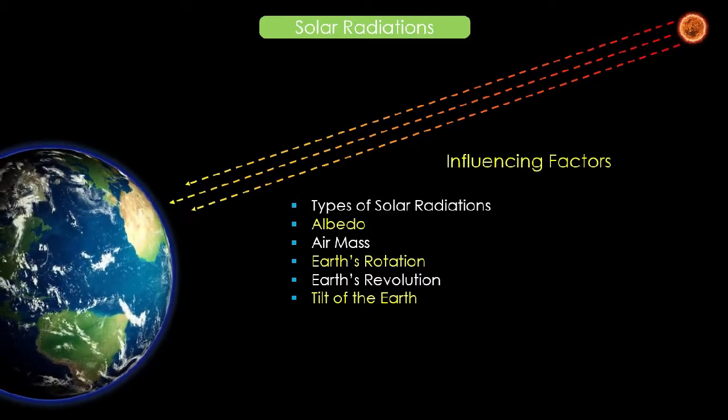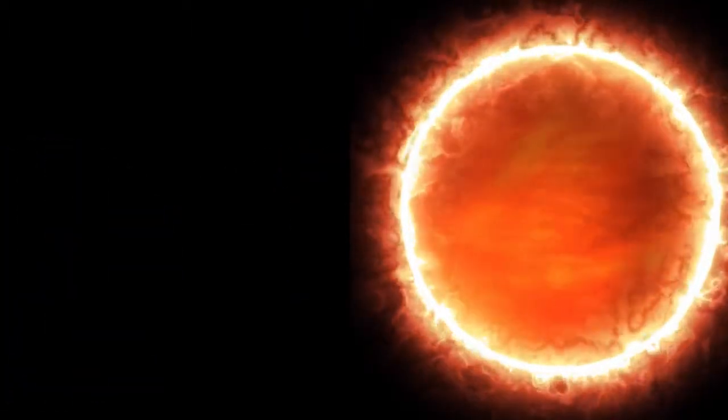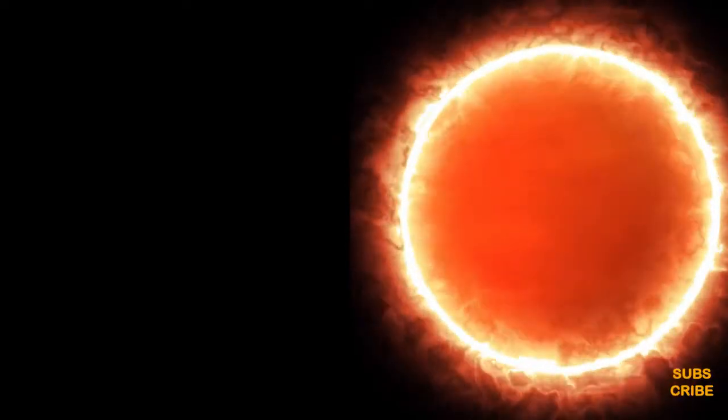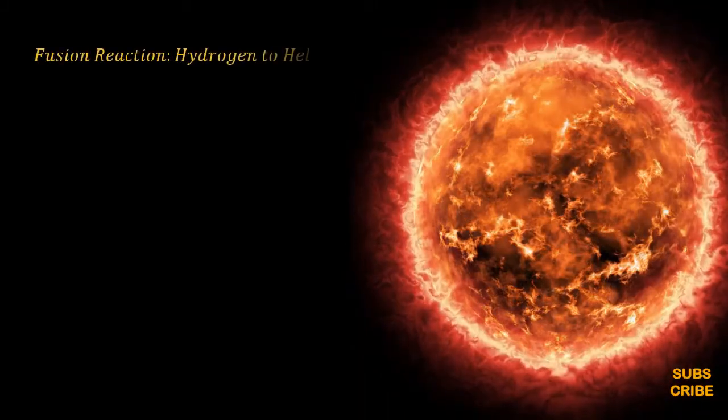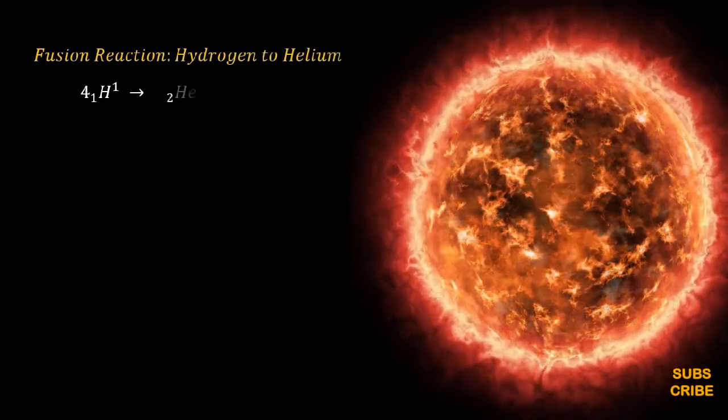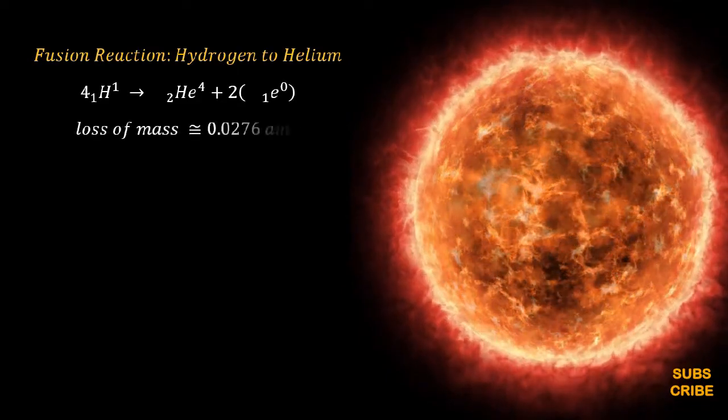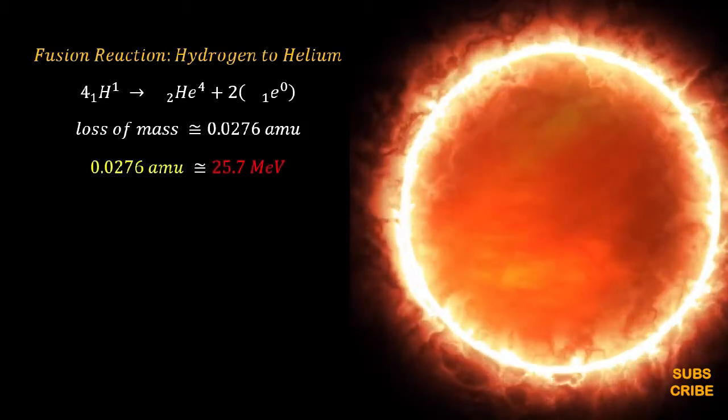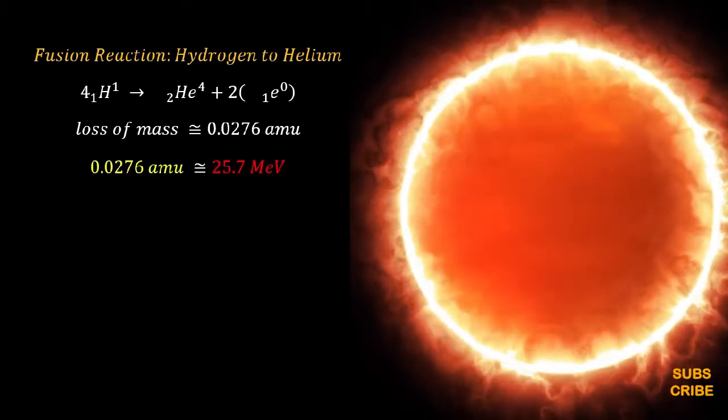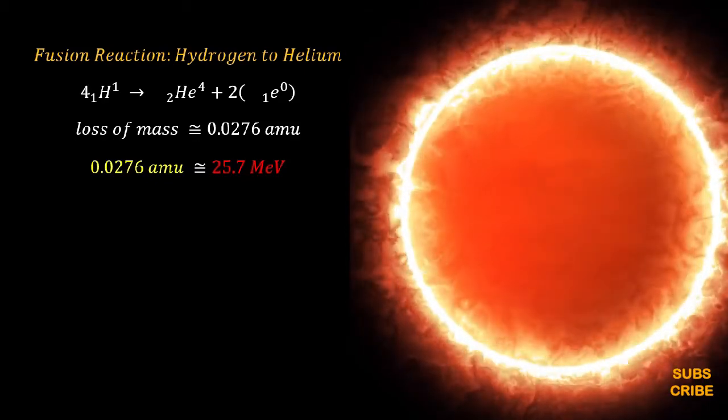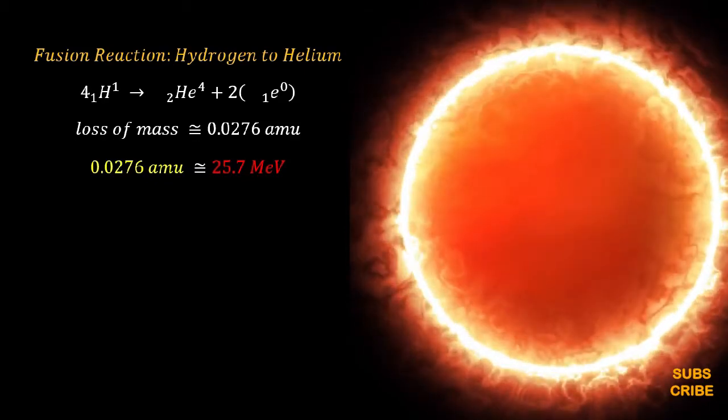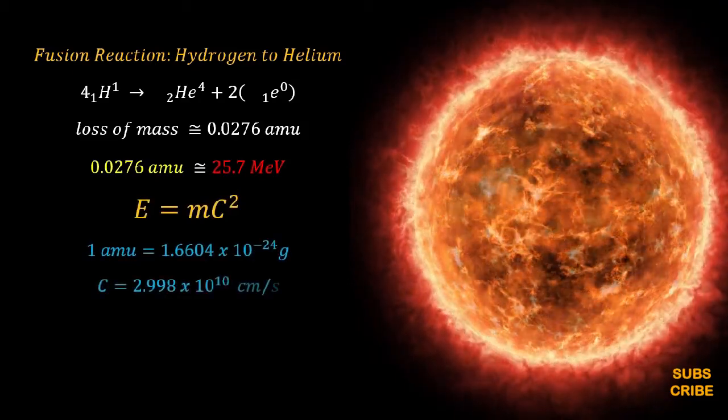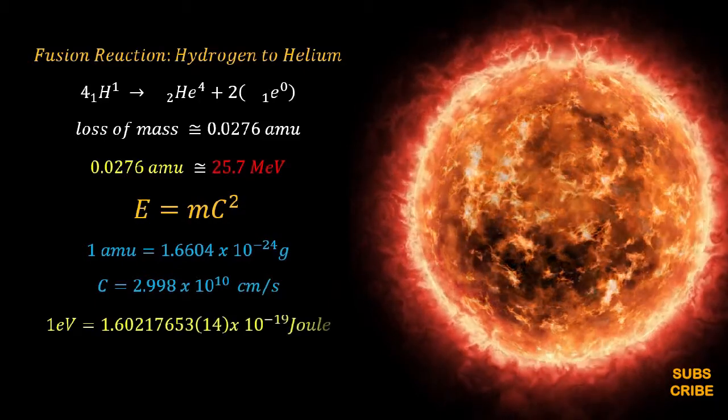As we know, the main source of energy is the sun. The energy comes from the sun due to continuous fusion reaction of hydrogen combining to form helium, resulting in loss of mass about 0.0276 atomic mass units. This loss of mass releases energy of 25.7 million electron volts. The rate of conversion according to Einstein's expression E equals MC squared, where one atomic mass unit equals 1.6604 times 10 raised power minus 24 grams.